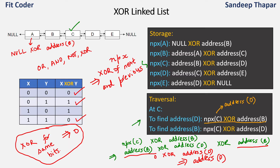If we want to go in the reverse direction to find address of B, we use npx(C) XOR address of D. Since npx(C) is address of B XOR address of D, we now have two address-of-D terms which XOR to 0, leaving us with address of B. So to go to the previous node we use npx of current and address of next; to go to the next node we use npx of current and address of previous. By doing these XOR operations we can traverse both forward and backward.